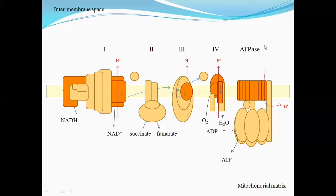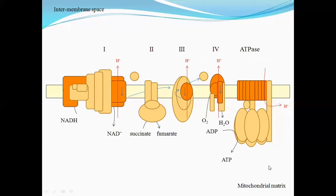When protons enter through ATP synthase into the matrix, there is a rotation and conformational change in the ATP synthase, and that results in the formation of ATP. The end product of ATP synthase is ATP. Together, these two parts — oxidation by the electron transport chain and phosphorylation by ATP synthase — form the process known as oxidative phosphorylation.